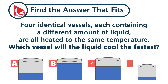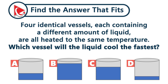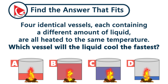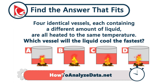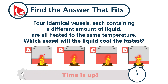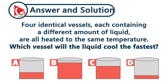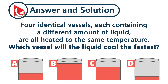Four identical vessels, each containing a different amount of liquid, are all heated to the same temperature. In which vessel will the liquid cool the fastest? Apply the principle of heat loss per unit volume. Liquids with less volume cool faster because they have less thermal mass and a greater surface-to-volume ratio. Since vessel D has the least amount of liquid, it will lose heat the fastest, making it cool down the quickest. The correct answer is choice D.